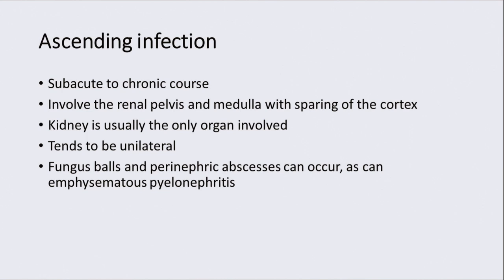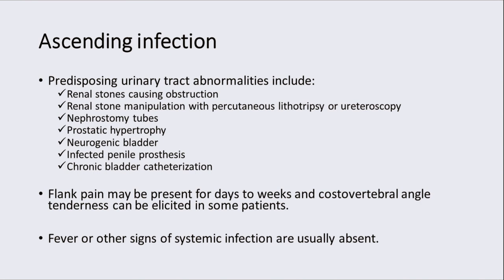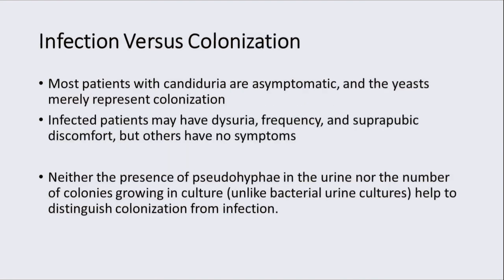Ascending infection usually has a subacute or chronic course. Here only the kidney is the involved organ, so it is unilateral and involves the renal pelvis and medulla with sparing of the cortex. Fungal ball, perinephric abscesses, and emphysematous pyelonephritis can also occur. Ascending infection predisposing factors involve all sorts of renal tract obstruction and manipulation. Focal signs may be present, but fever or other signs of systemic infection are usually absent.